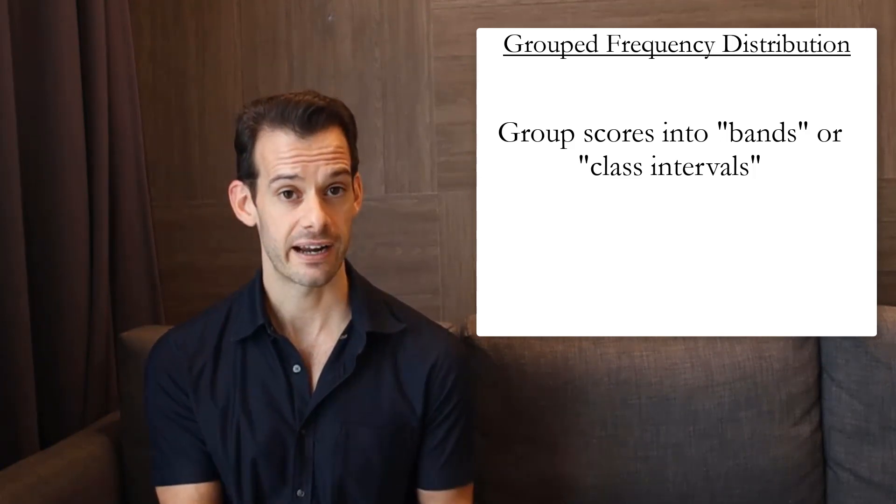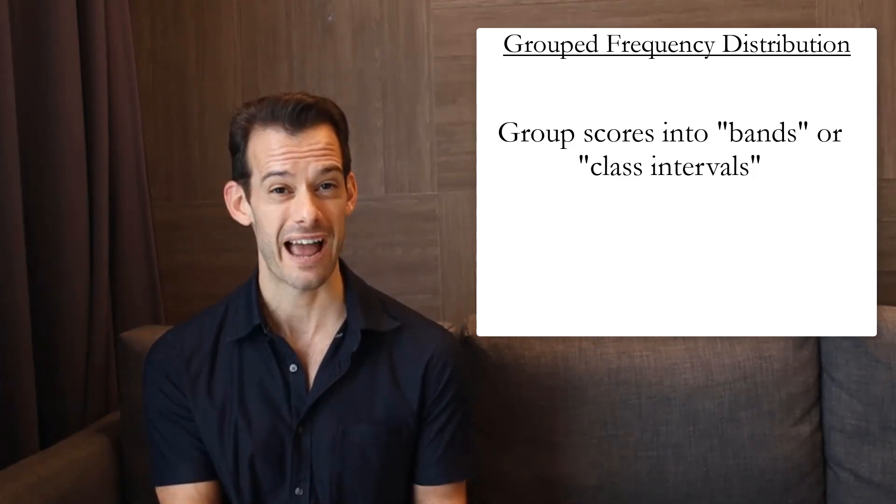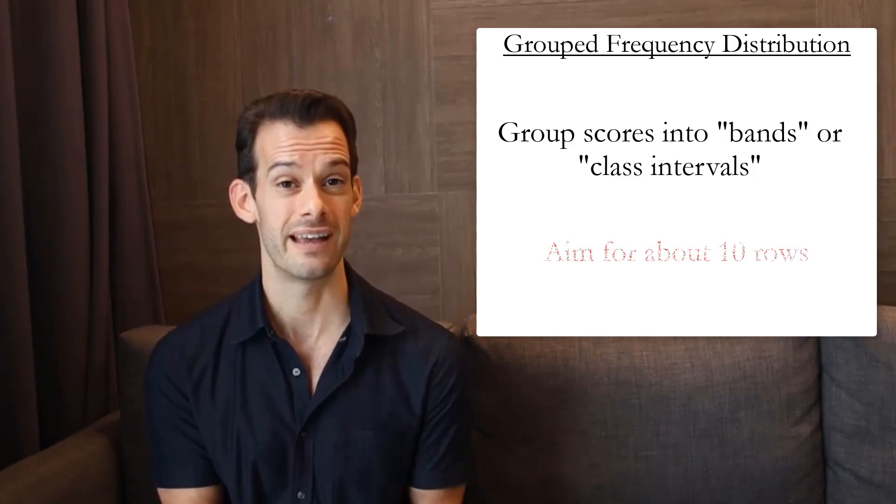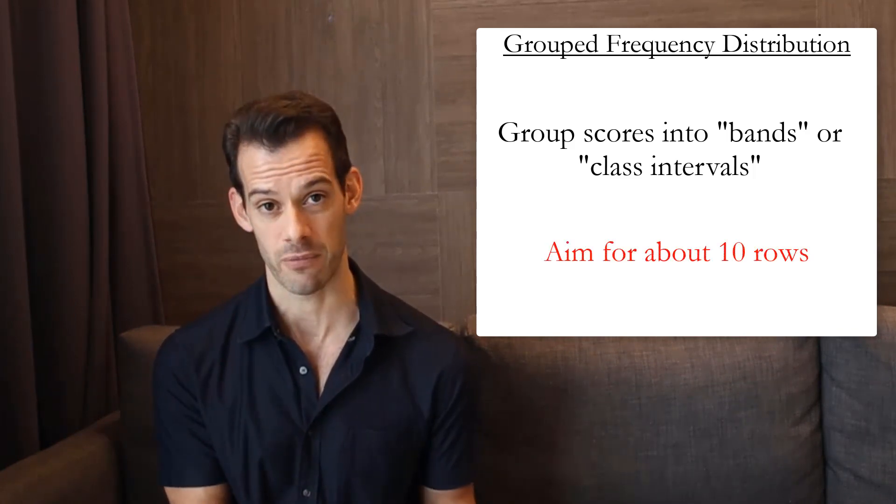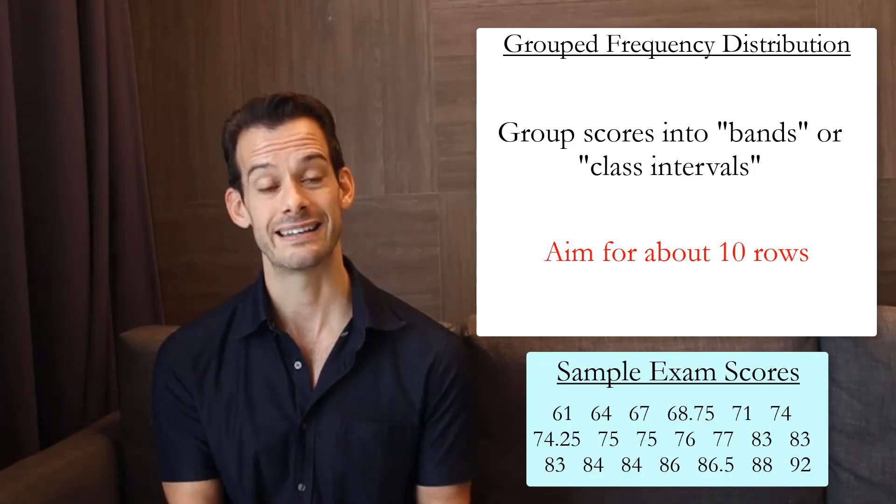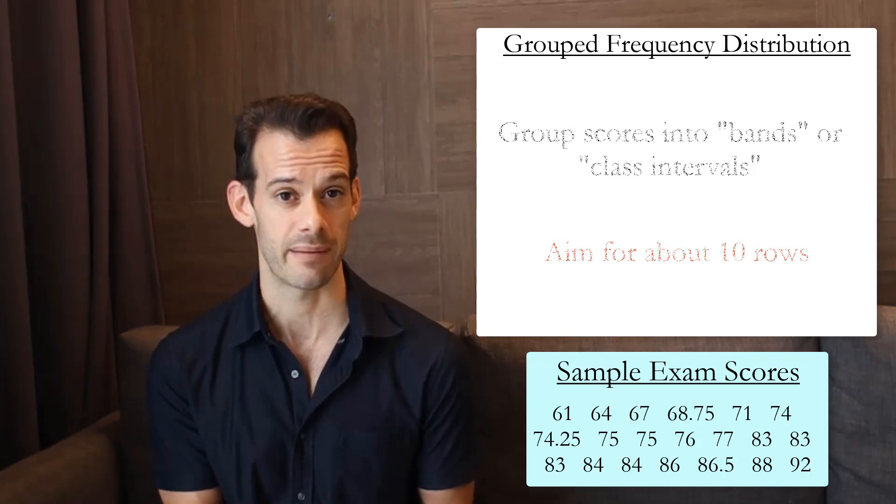For ease of reading a frequency distribution table should probably have somewhere between 5 and 15 rows. So a good rule of thumb is to aim for about 10 rows in your table. So now we have to determine how can we take the full range of our sample here and condense it to be about 10 rows in our table.